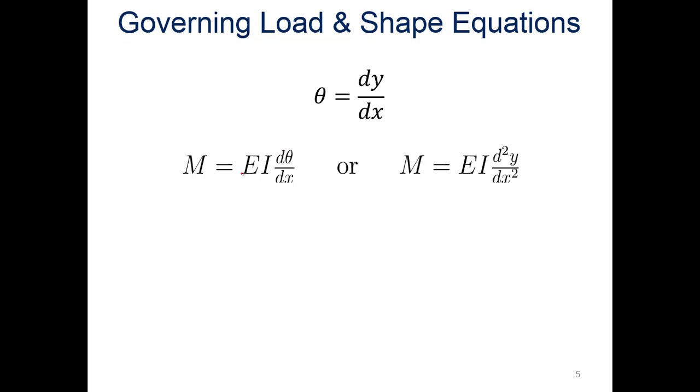Moments are the modulus times the moment of inertia times the differentiation of this angle with respect to X. So we can overall define that as the moment. But because of this initial equation we have up top, if we substitute that in for the angle, we can come up with a second derivative of Y with respect to X, and also have that as an equation for the moment.